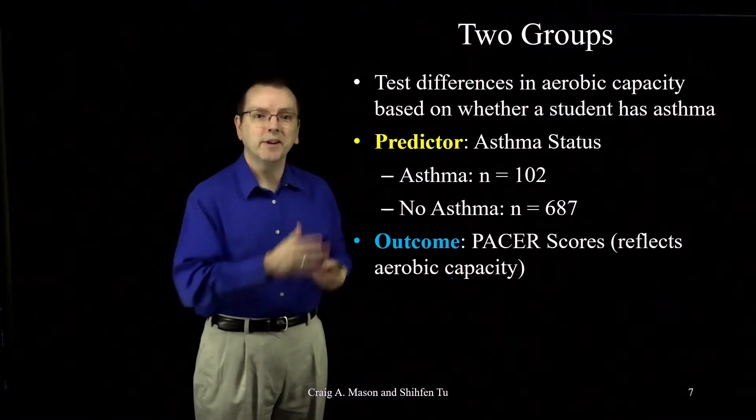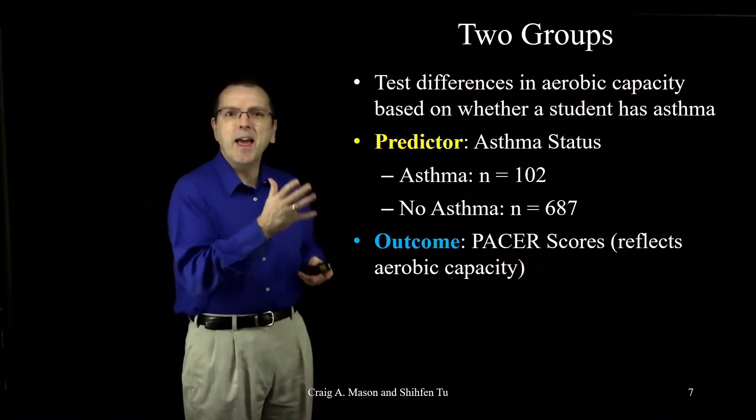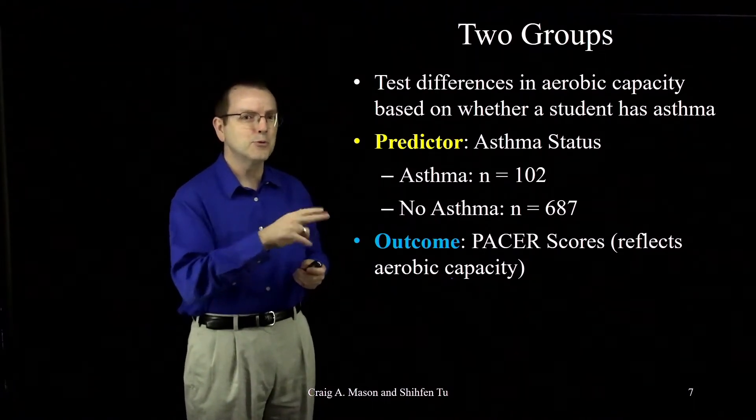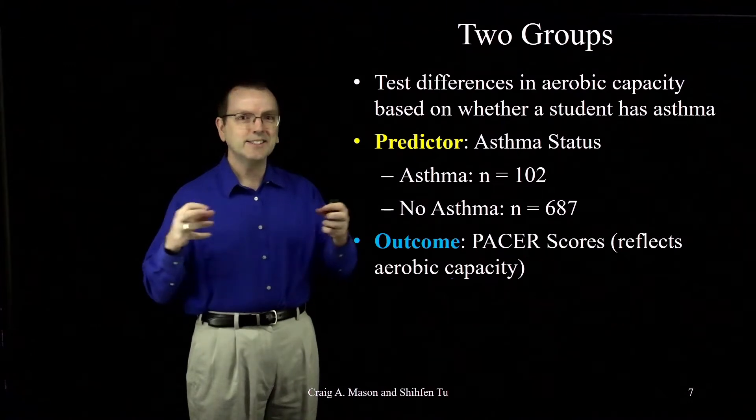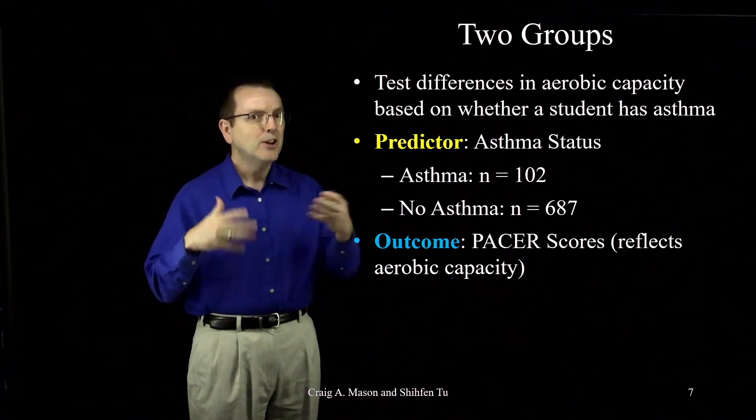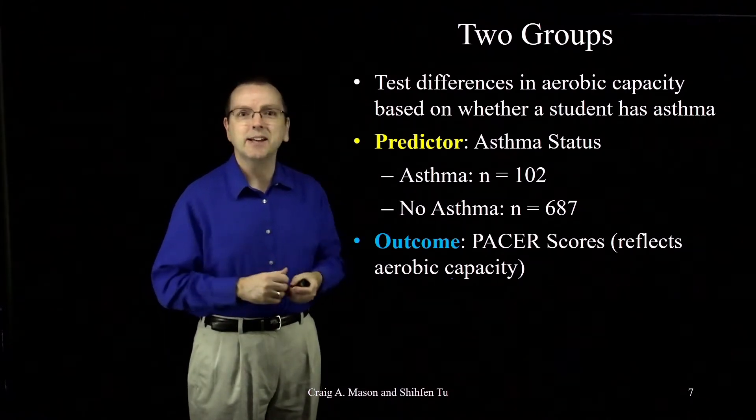Ignoring regression for a moment, look at this. How else could we analyze this data? Two groups, a nice interval scale outcome. You could do a two independent samples t-test, couldn't you?